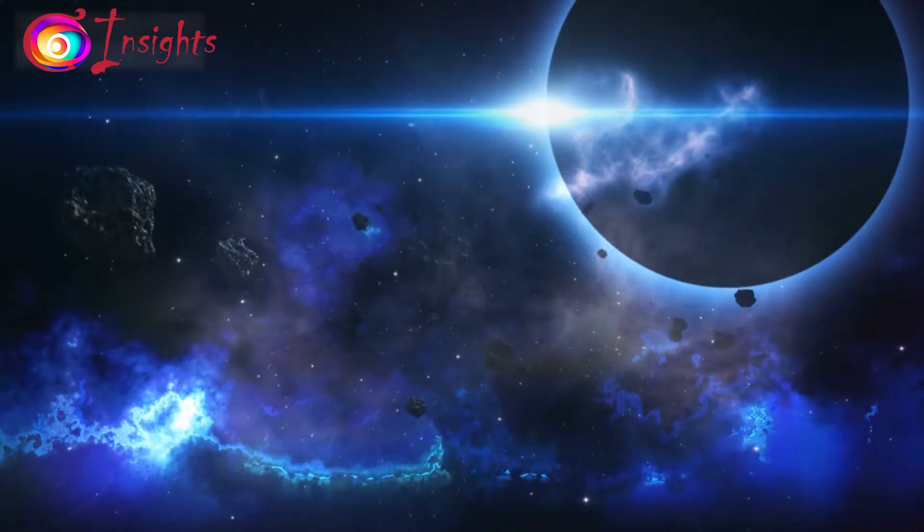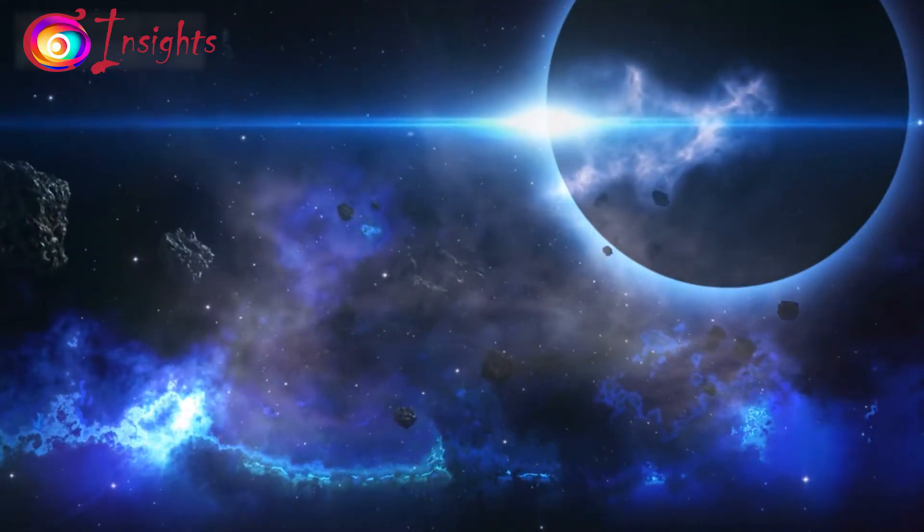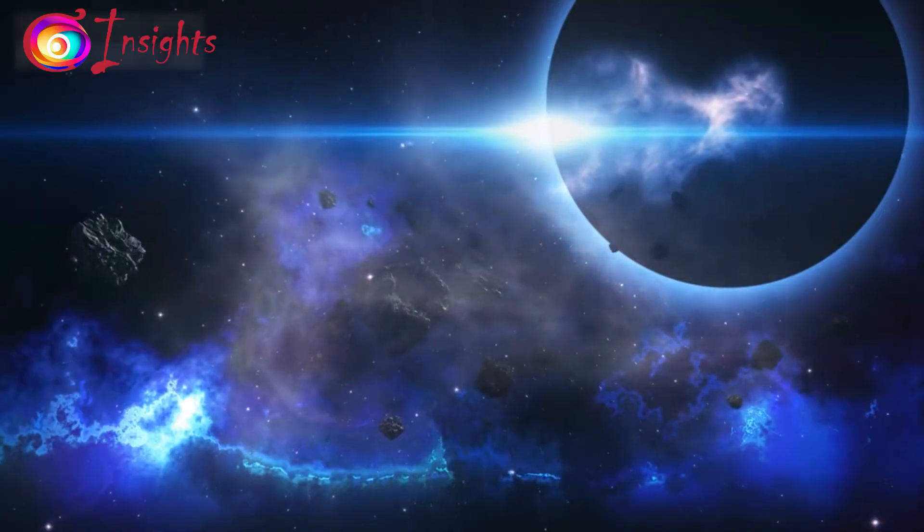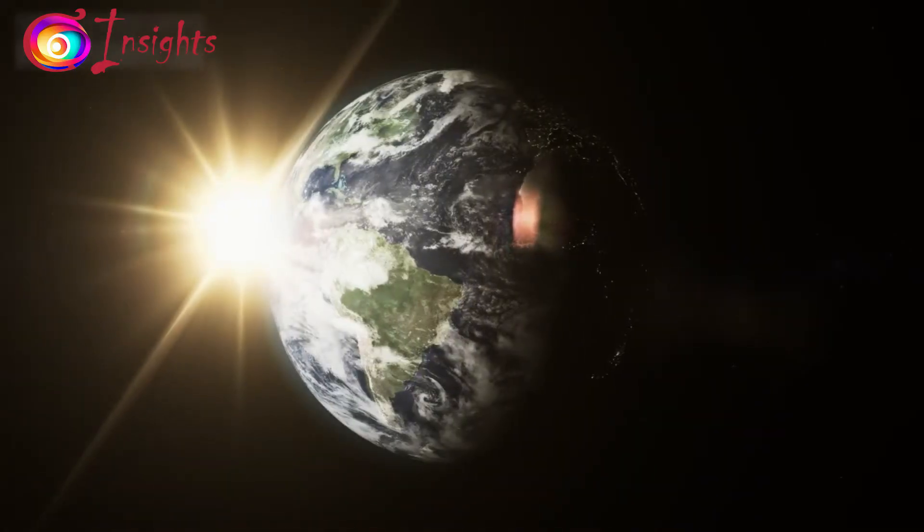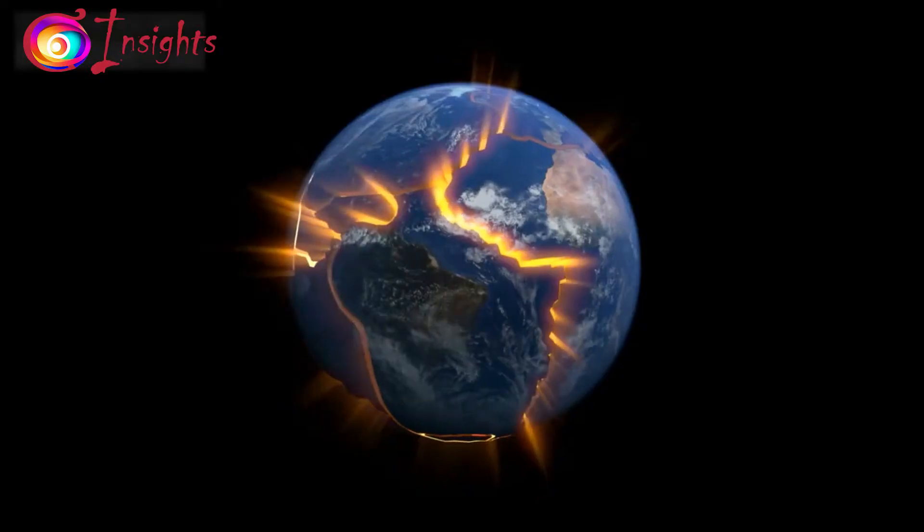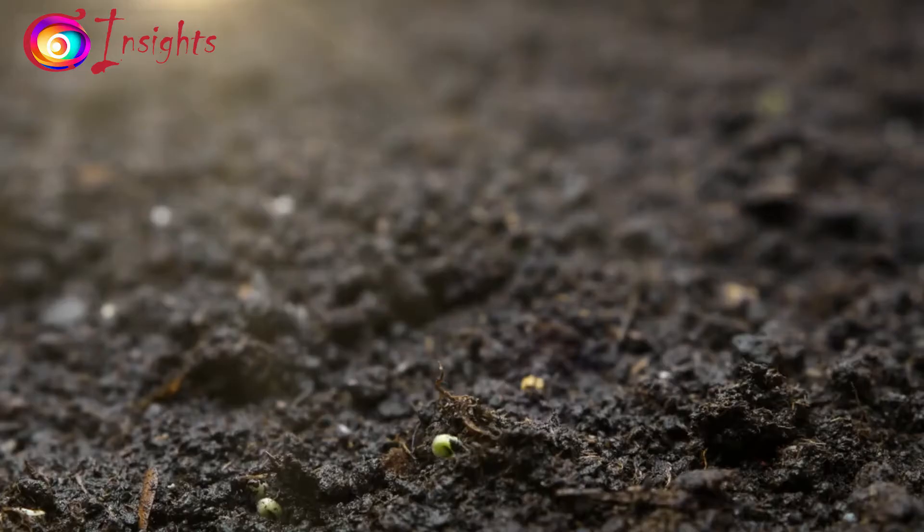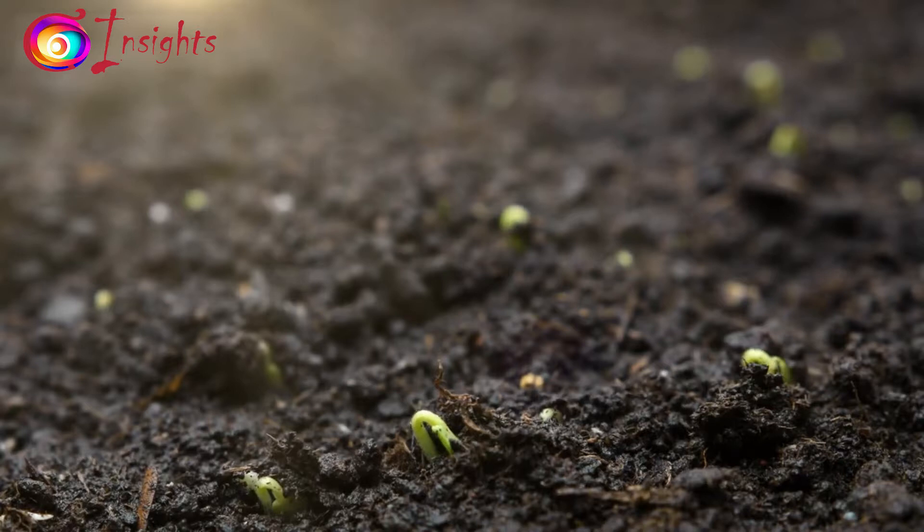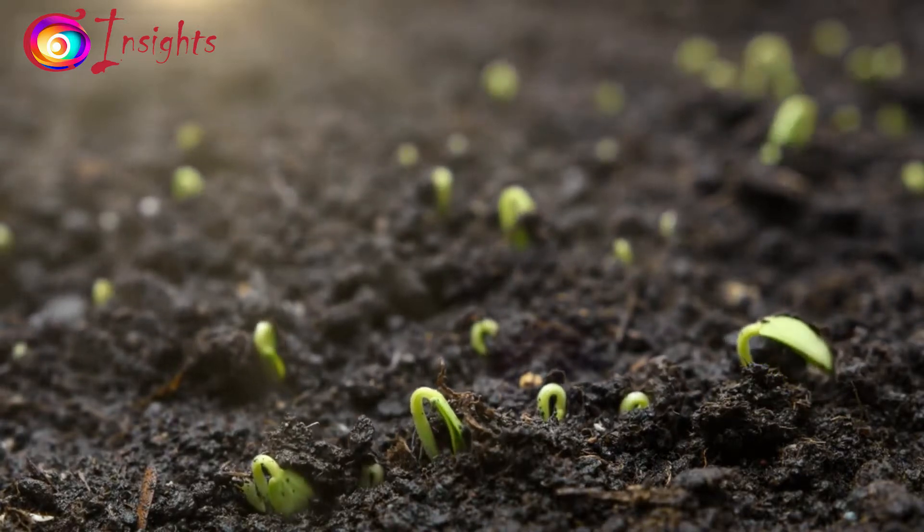Around 4.6 billion years ago, our planet, Earth, formed from a swirling cloud of gas and dust. In its early stages, Earth was an inhospitable place with a volatile atmosphere and intense volcanic activity. But amidst this harsh environment, the stage was set for the emergence of life.